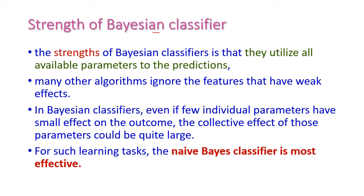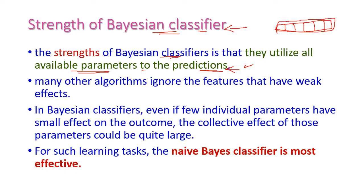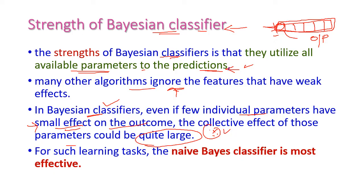Let us see the strength of the Bayesian classifier — why it is the most effective algorithm in machine learning. The Bayesian classifier utilizes all available parameters to predict particular information from a dataset. For example, if the dataset has 10 parameters, the Bayesian classifier will use all 10. Hence, the output will be very accurate compared to other algorithms, which may ignore some features. Even if a few individual parameters have small effects on the outcome, the collective effect of those parameters could be quite large. This is a very significant strength of the Bayesian classifier.